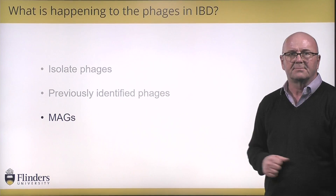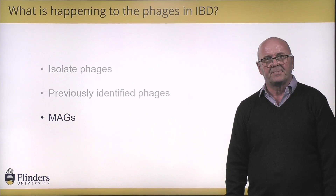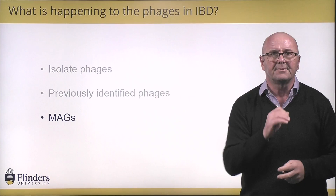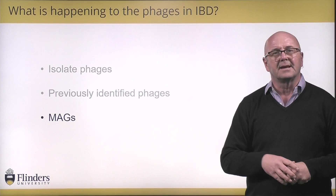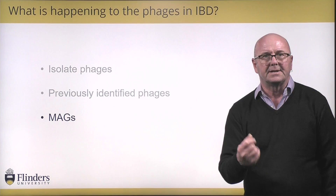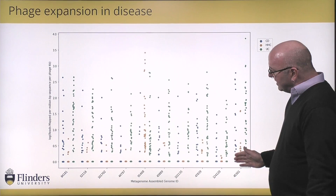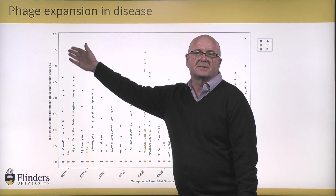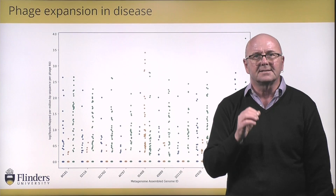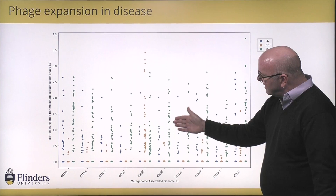We've looked at isolate phages and previously identified phages — now what about metagenome assembled genomes? We took our metagenomes from all of those patients, assembled them, and used binning characteristics to bin them together based on coverage, composition, and similar features to get metagenome assembled genomes. We then did the same kind of analysis, plotting metagenome assembled genomes against normalized read counts, and again you can see a massive expansion of phages in either Crohn's disease or ulcerative colitis.